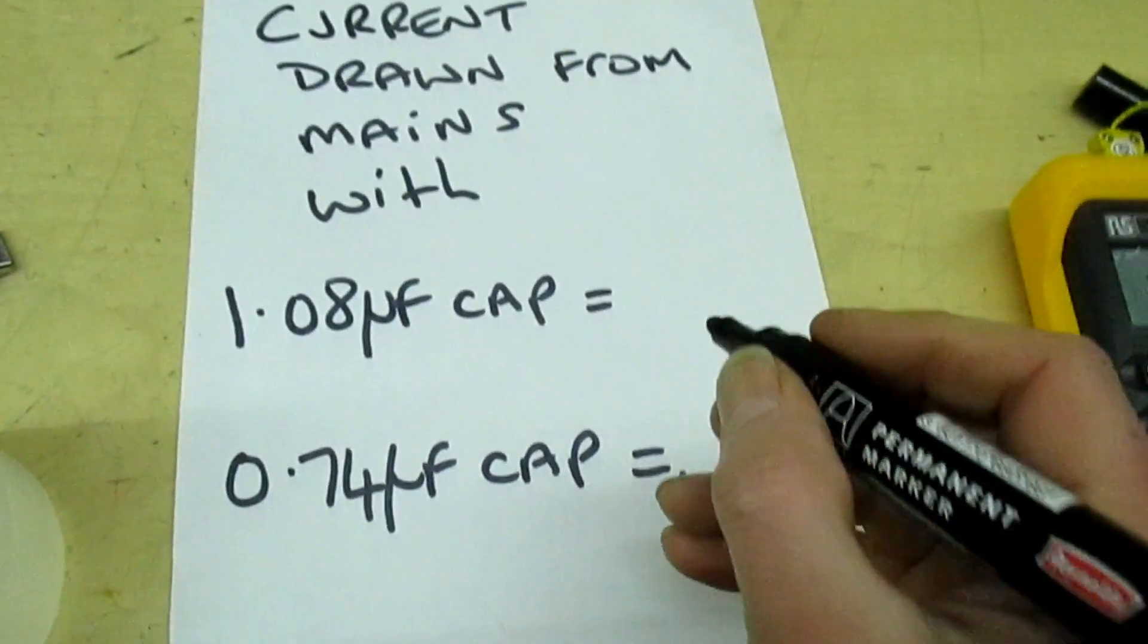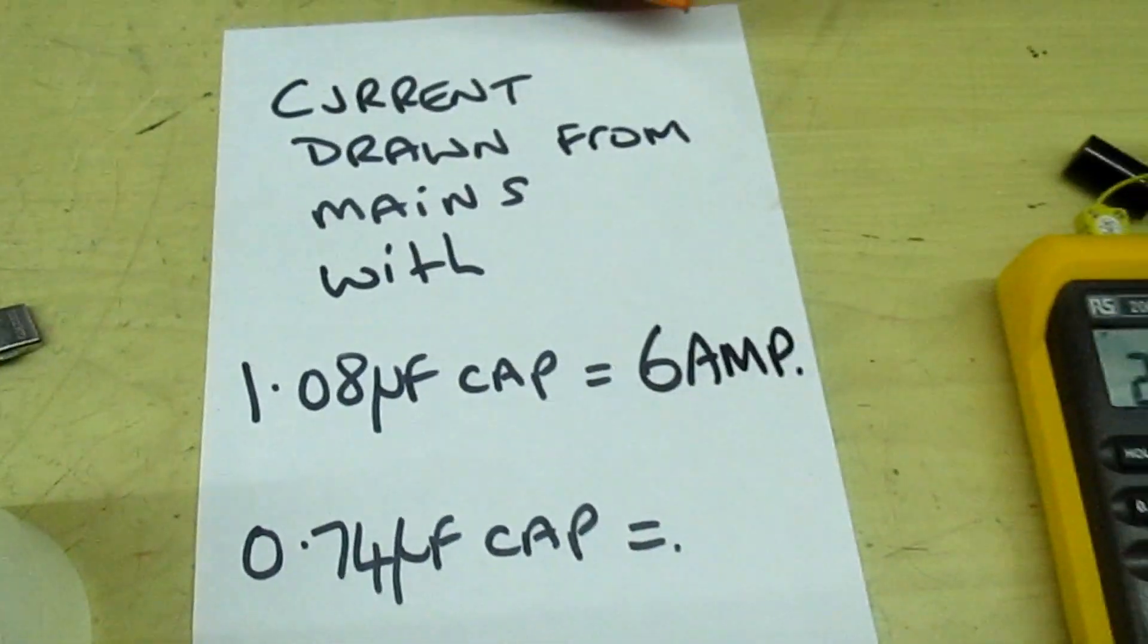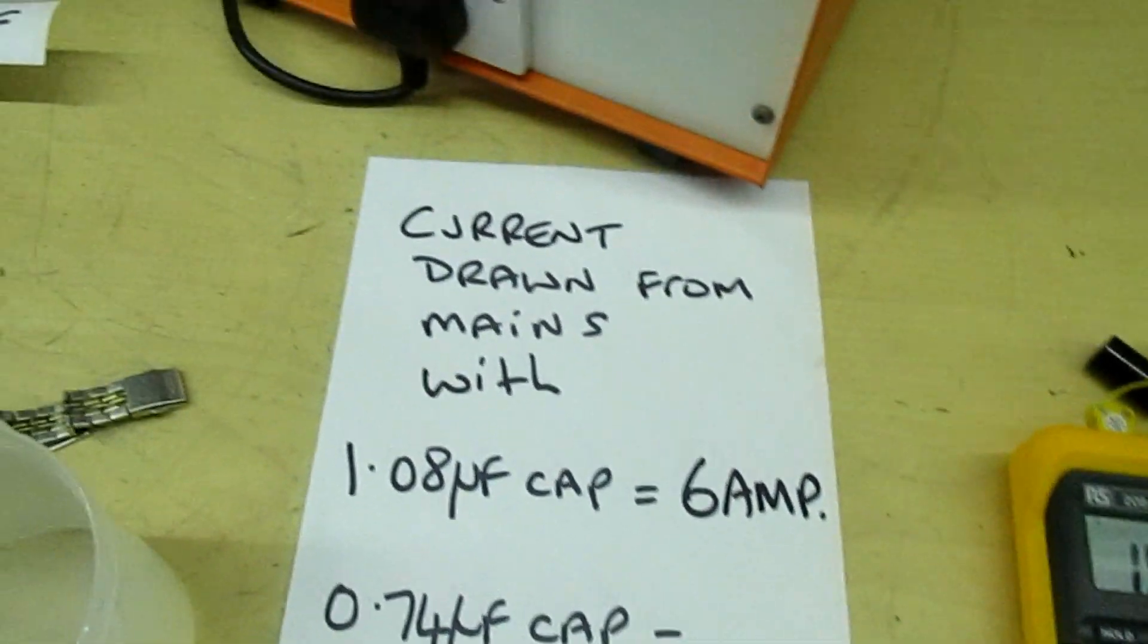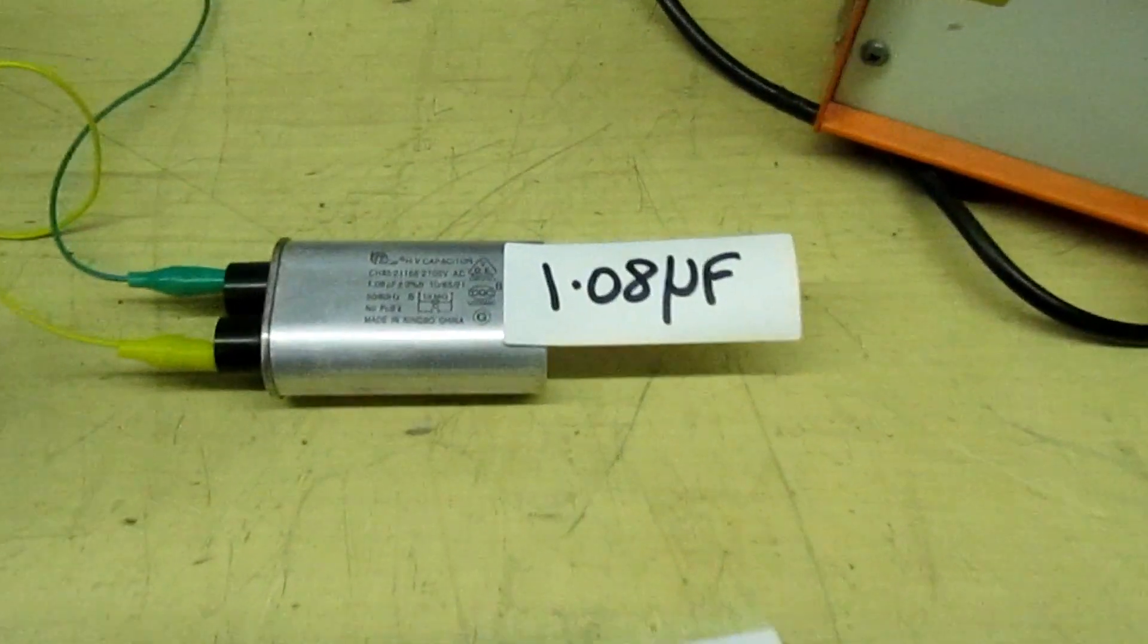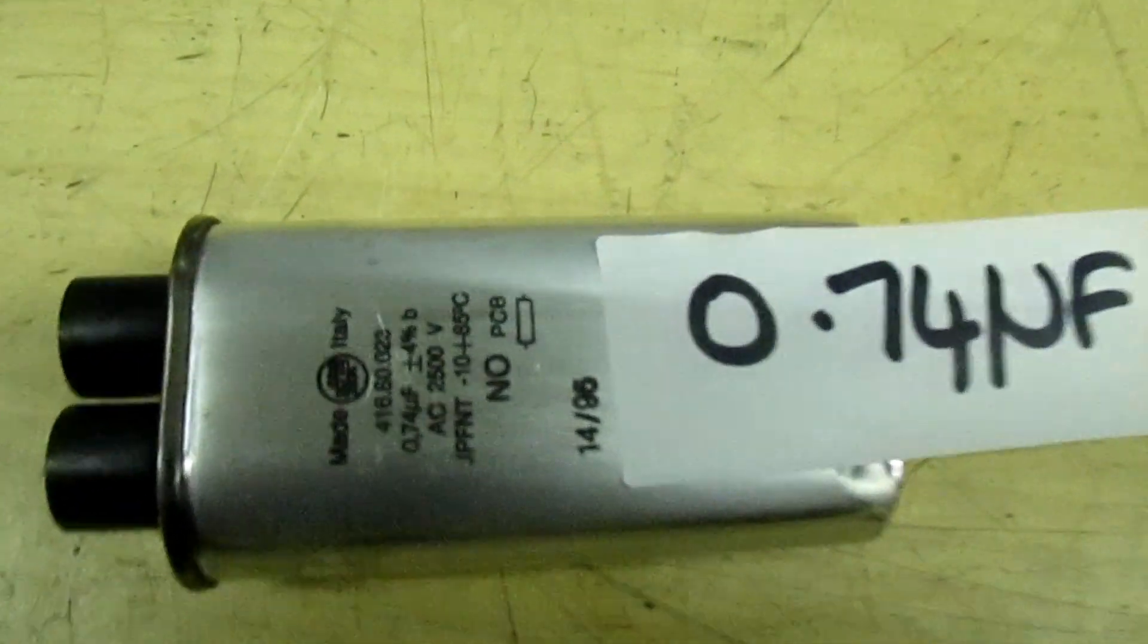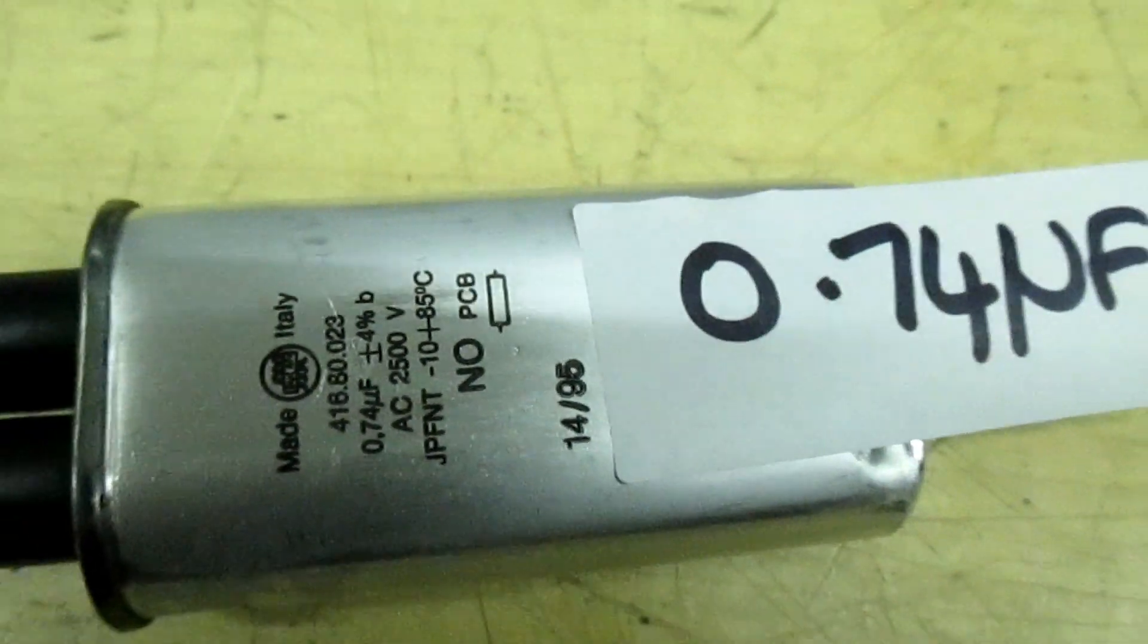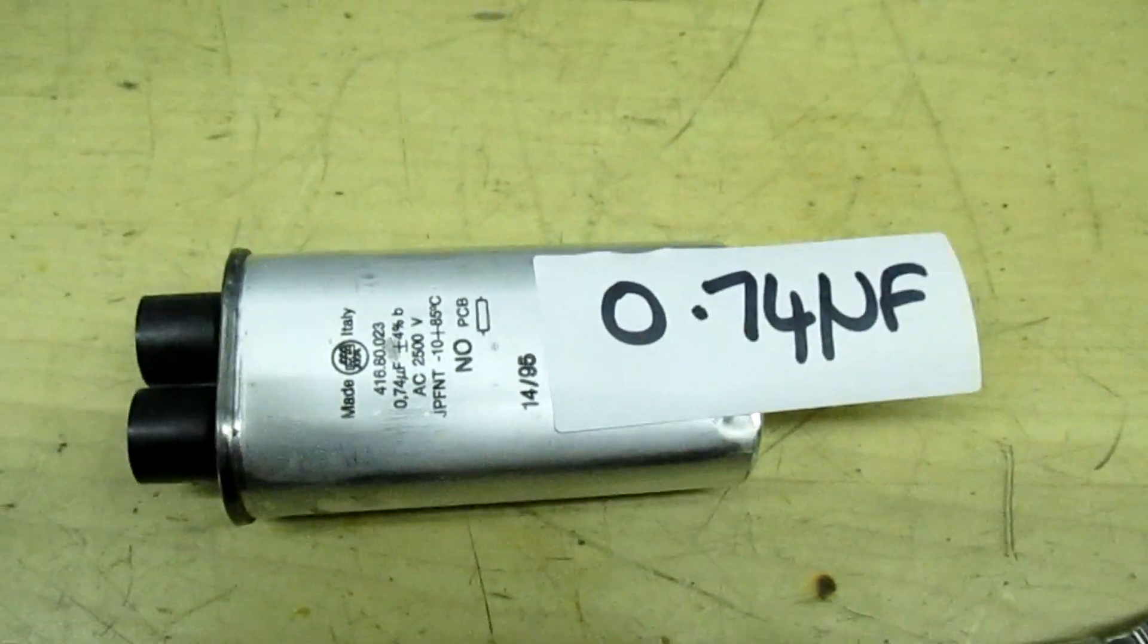Right, so the temperature raised up to 49 degrees, and the current we were drawing was 6 amps. Right, next I'll repeat the test, but the 1.08 microfarad capacitor, I'm going to swap that for a 0.74 microfarad one, and then we'll repeat the test again to see the difference.